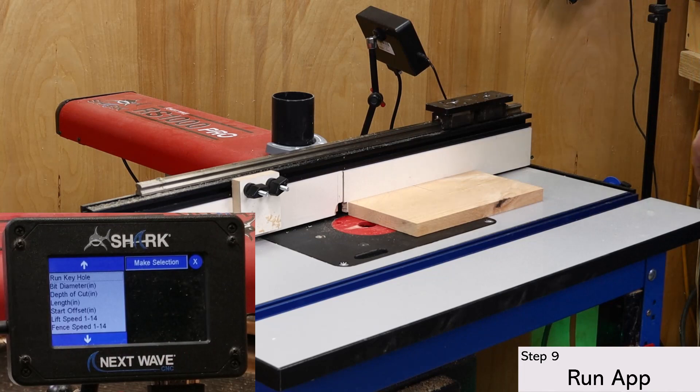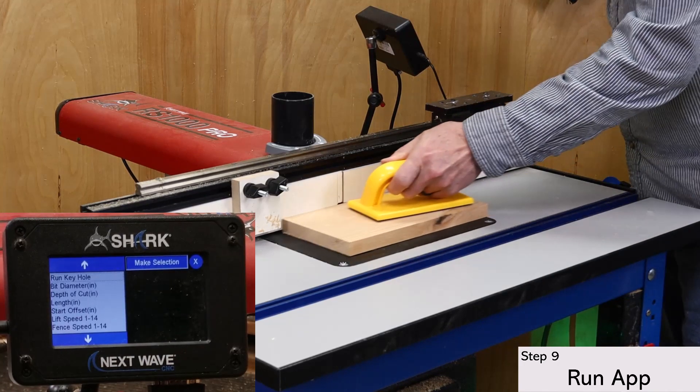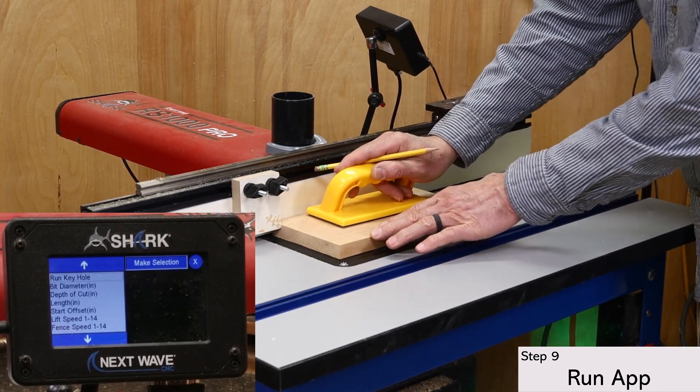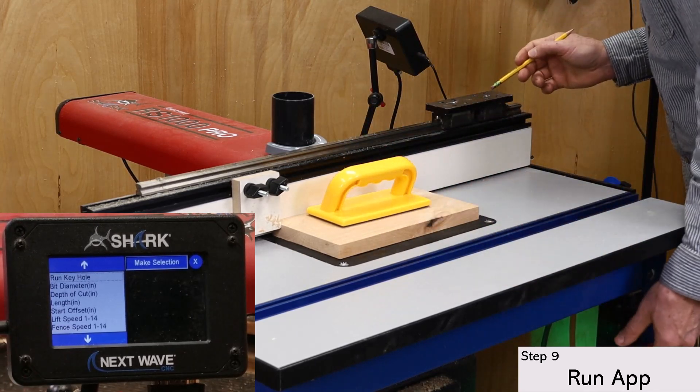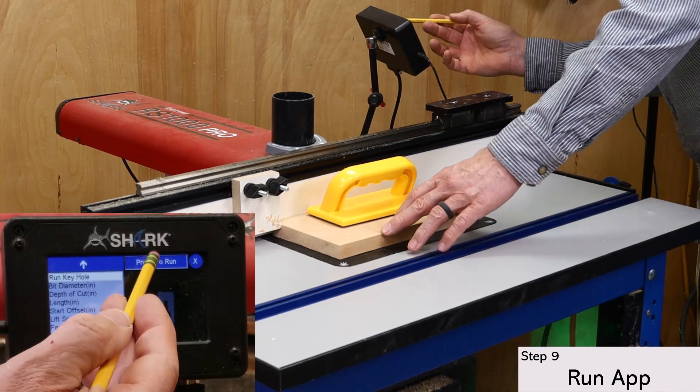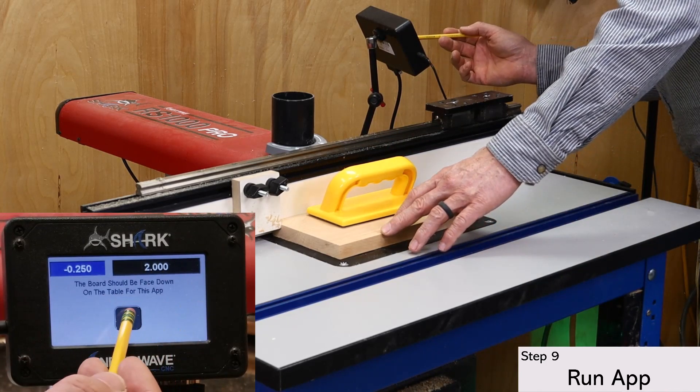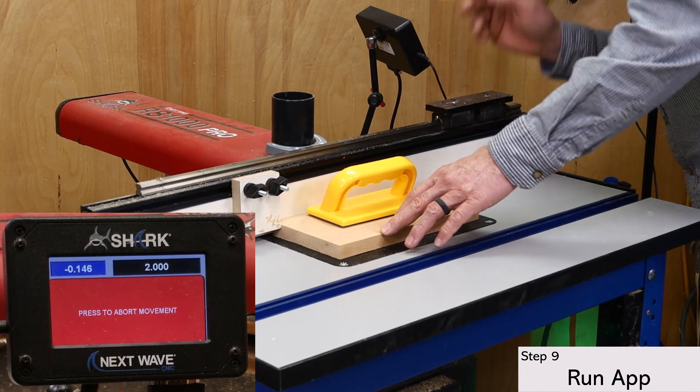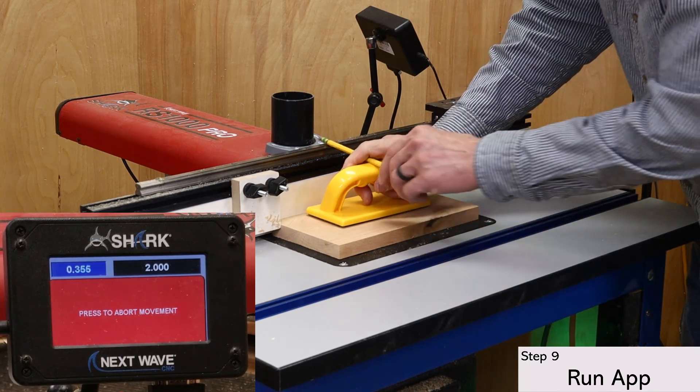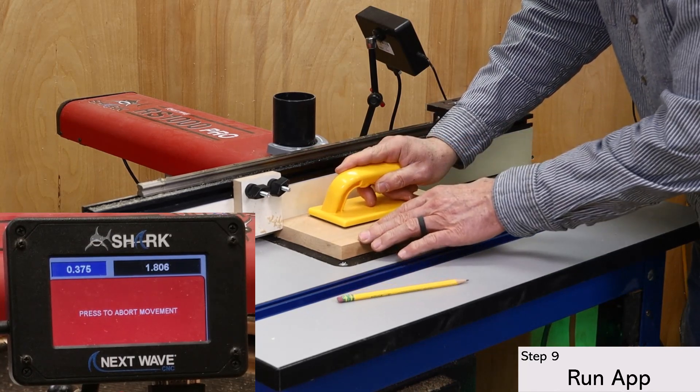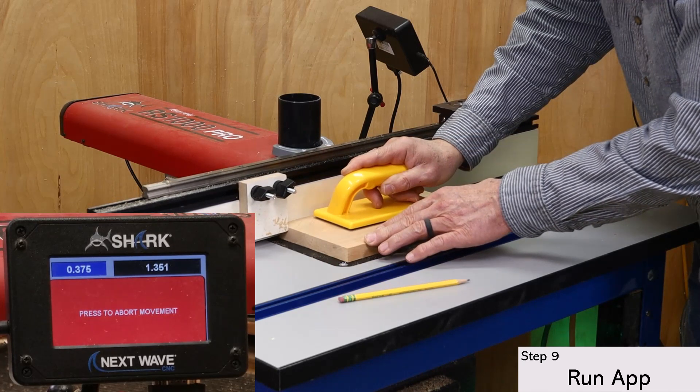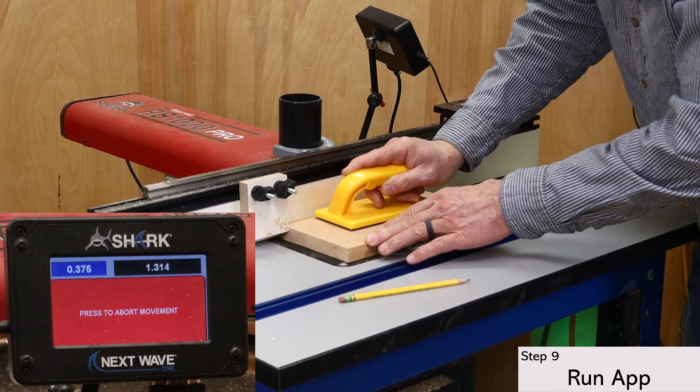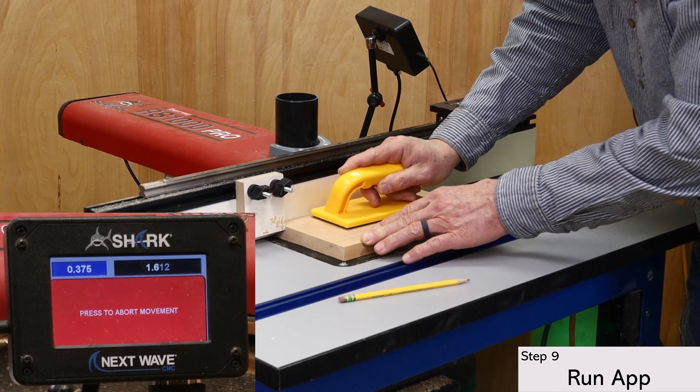I'm using a push block to hold my project down on the table and against the fence and the stop block. It doesn't take a lot of pressure, but you don't want it to lift up or slip sideways during routing. So make sure to keep constant pressure on it as the fence moves forward and again as it retracts. You may have noticed that as soon as I pushed the OK button, the bit started to lift. So it's important to get your push block on the wood quickly. I hope Next Wave adds a pause feature to this in the future so it's not such a rush.